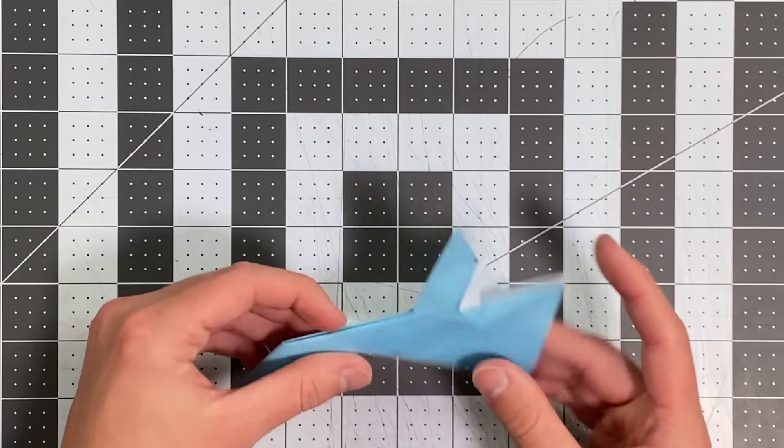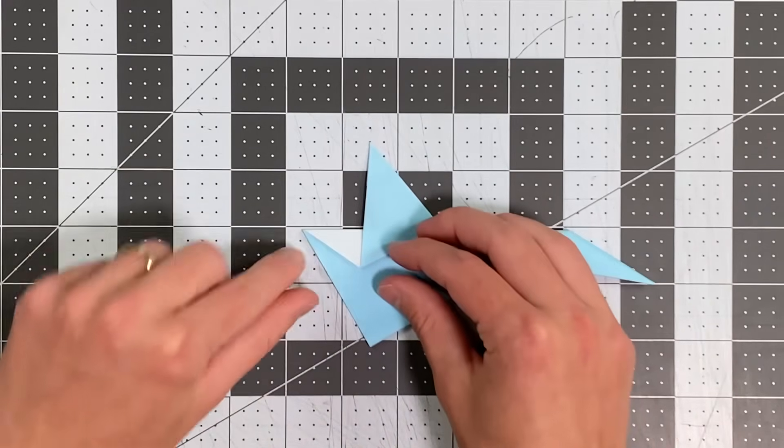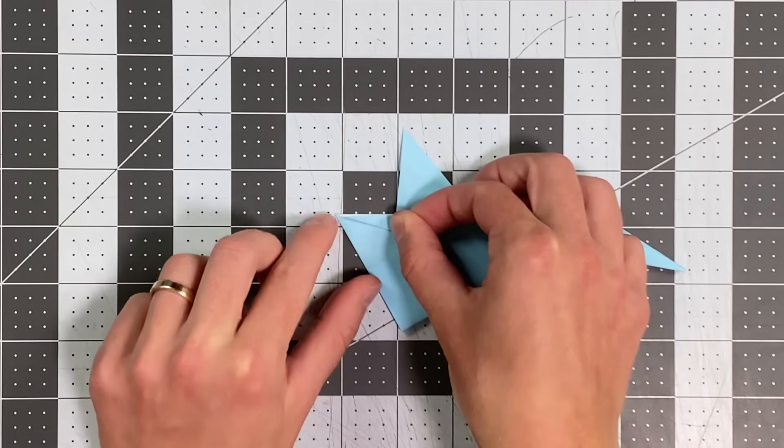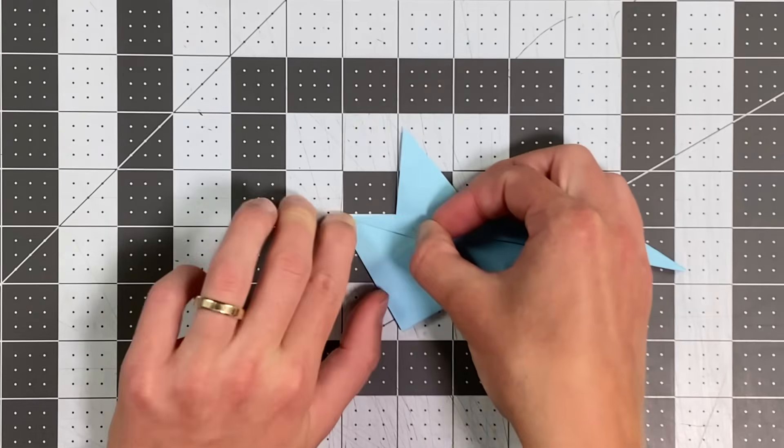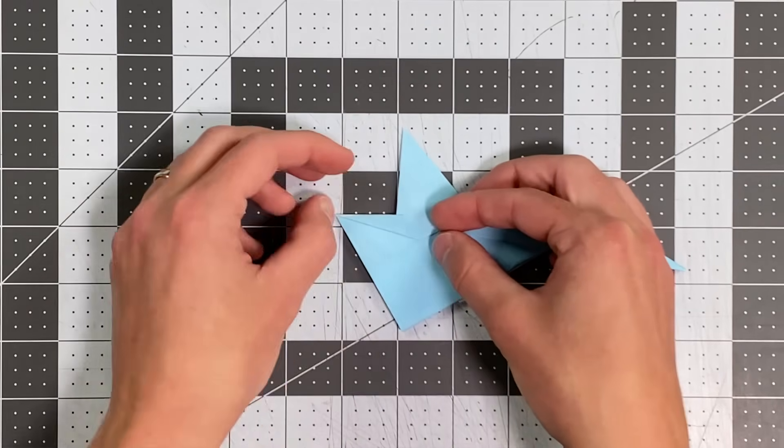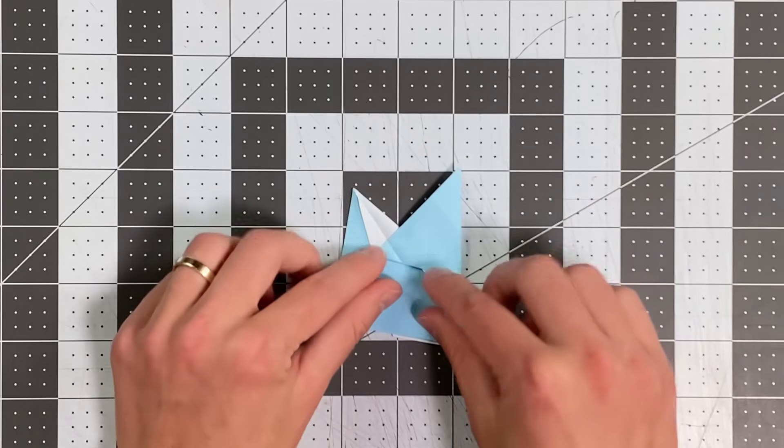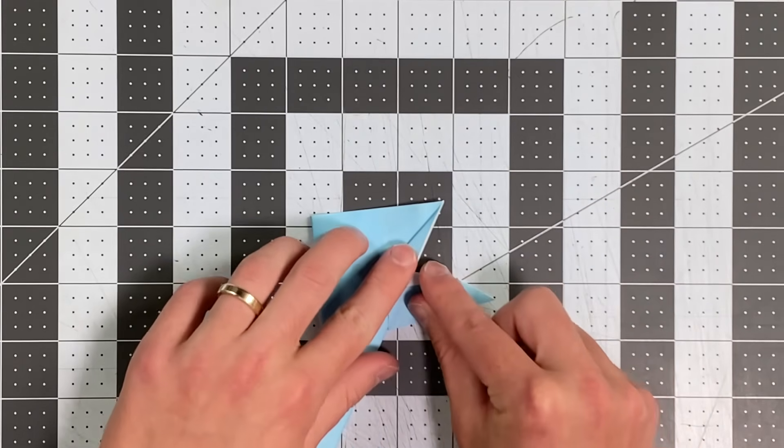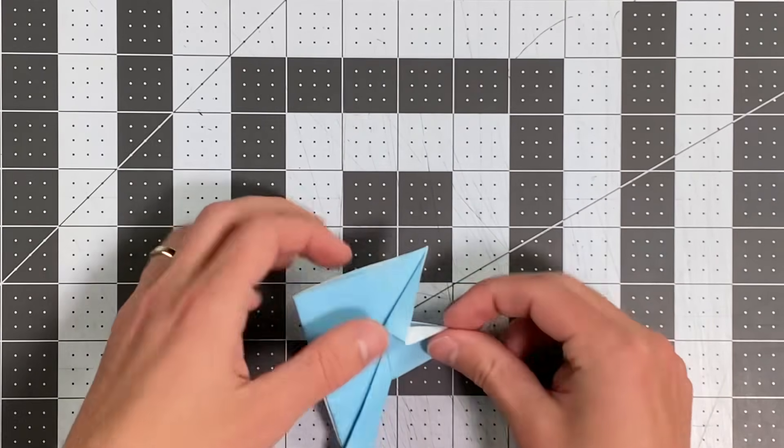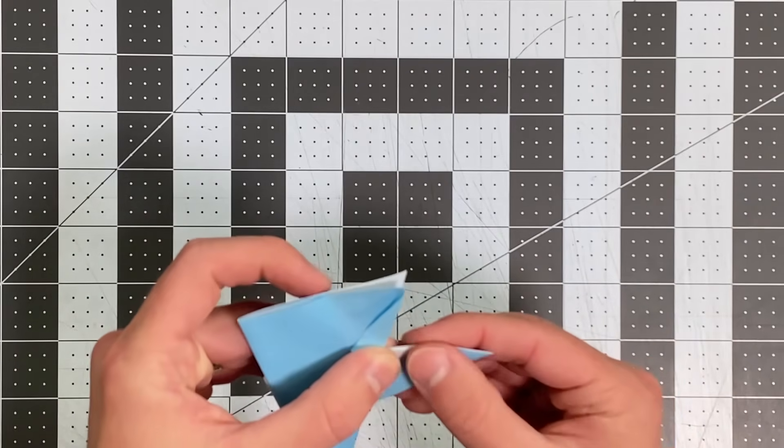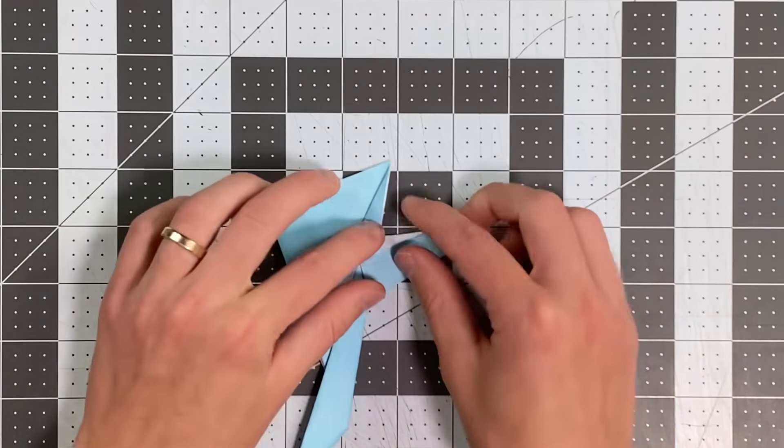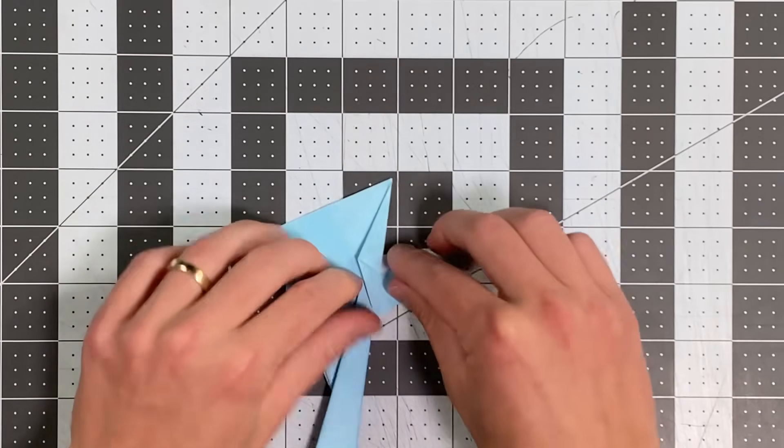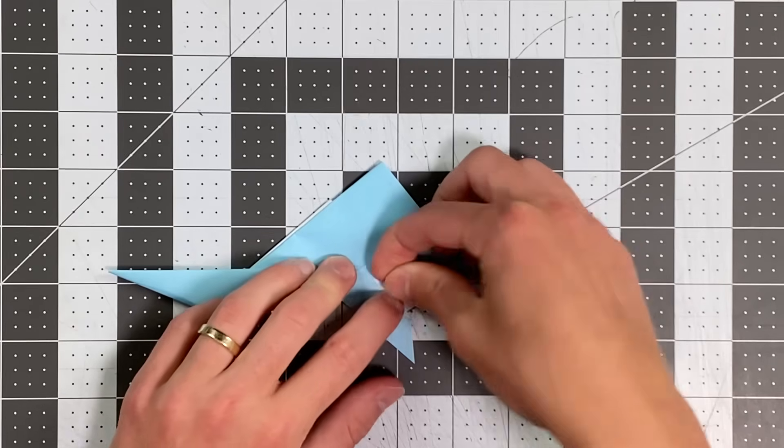And once you do one side, you can flip it over, fold this edge to that edge right there. And then I don't have it marked on this side as visibly, but you're just folding from that point to that same middle point. And of course you want this to be symmetrical to your other side. So really just using whatever you ended up with on the first side as your guide for this side is always the best solution.